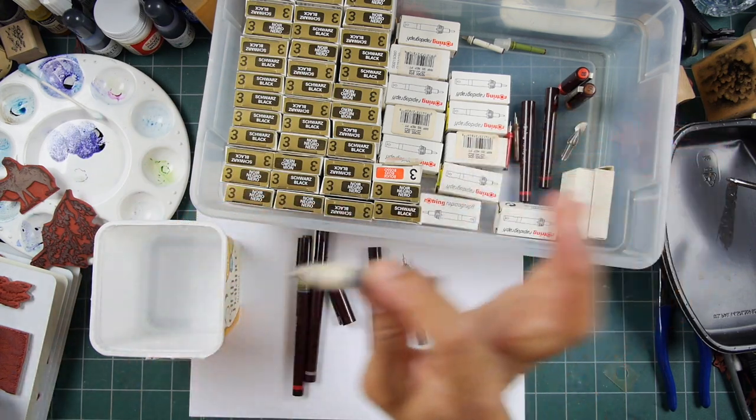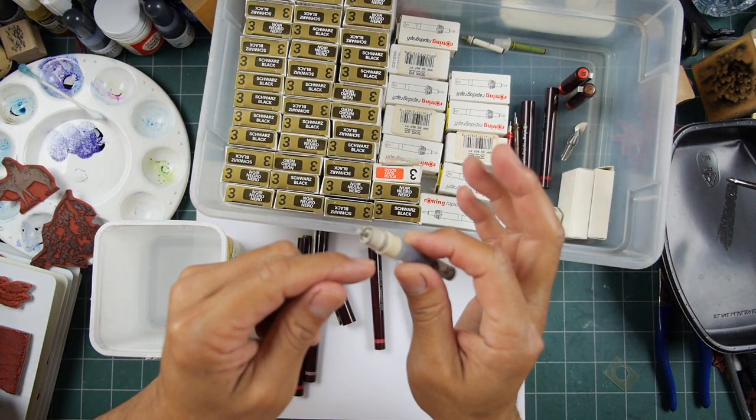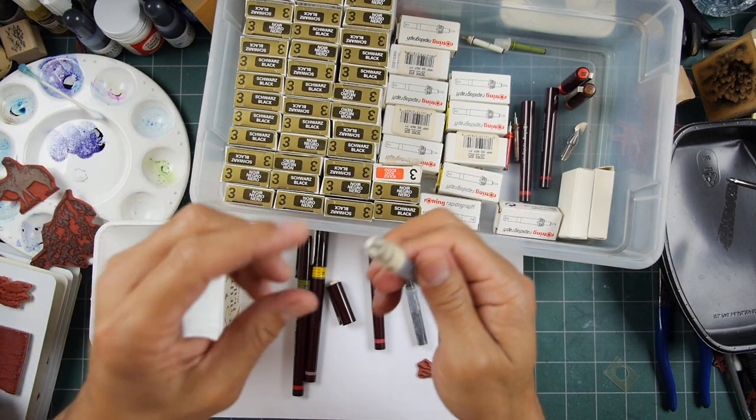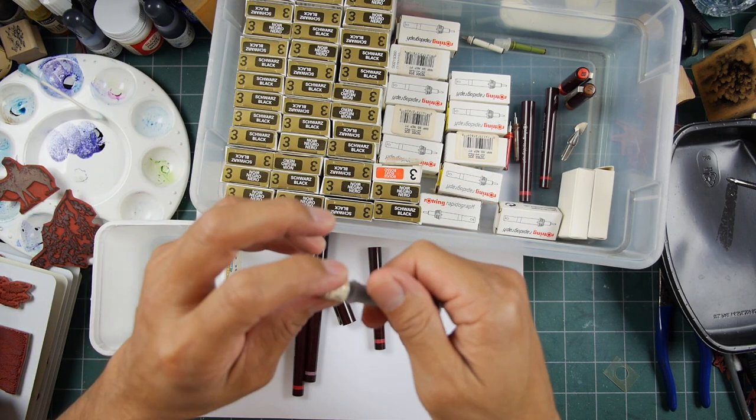Sometimes there'll be some dried ink in there so you might have to work it a little bit, or you can soak it in water overnight or something like that, or you can just take it off with a pair of pliers.